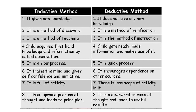Inductive method is a slow process, while deductive method is a quick process. Inductive method trains the mind and gives self-confidence and initiative, while deductive method encourages dependence on other sources. Inductive method is full of activity, while deductive method has less scope for activity. Inductive method is an upward process of thought and leads to principles, while deductive method is a downward process of thought and leads to useful results.